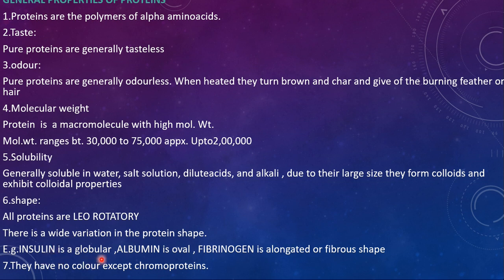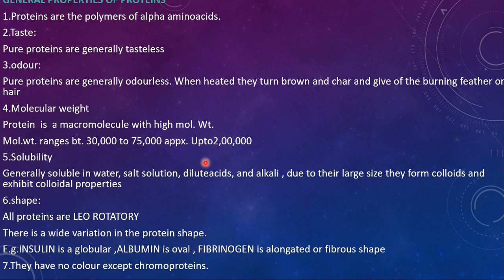For example, insulin is globular, albumin is oval shaped, and fibrinogen is an elongated fibrous shape. Actually proteins do not have any color, but there are certain proteins called chromoproteins which do have color. These are the few general characters or physical properties of proteins.